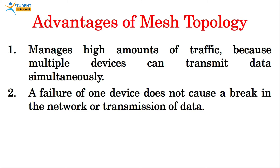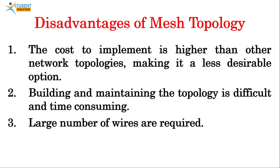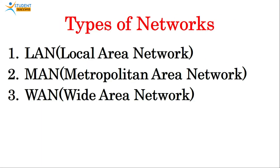A failure of one device does not cause a break in the network or transmission of data. Disadvantages of mesh topology: the cost to implement is higher than other topologies, making it less desirable. Installing and maintaining the topology is difficult and time consuming, and a large number of wires are required. Next we come to the types of networks — there are basically three types: LAN, MAN, and WAN.